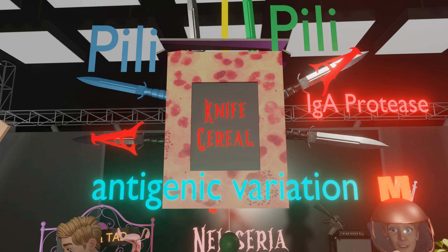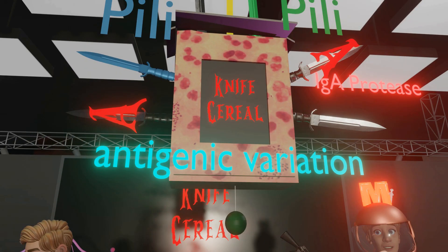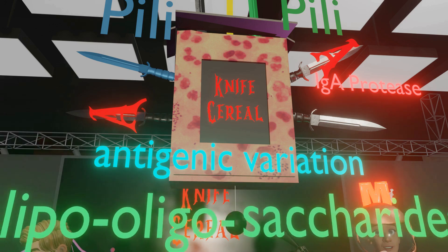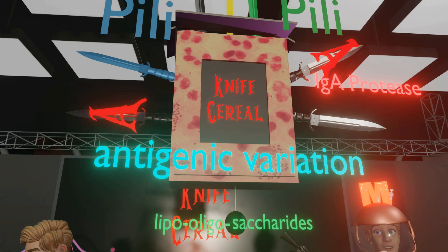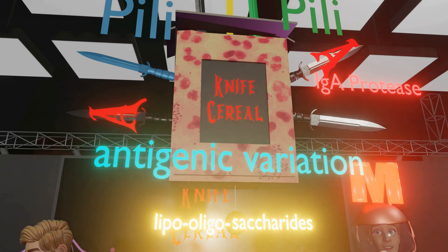In terms of virulence factors, we notice this olive-colored lollipop, which reminds us of the lipooligosaccharides of NYSERIA, which has strong endotoxin activity. These lipooligosaccharides are part of the outer membrane of NYSERIA with an ability to create a strong pro-inflammatory response.